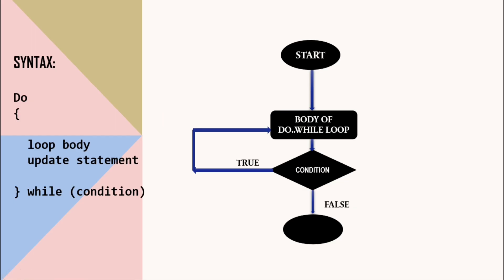We already studied for loop and while loop, where we have seen that the loop condition is tested at the top of the loop. On the other hand, do-while loop checks its condition at the bottom of the loop. It is very similar to while loop except the fact that the body of the loop is executed at least once.